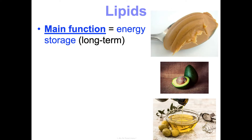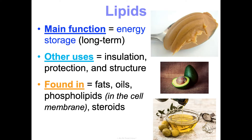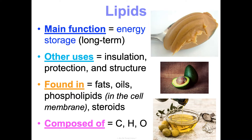Next are the lipids. Their main function is also energy storage, but long-term. We also use them for insulation, protection, and structure. When you think of lipids, we most often think of fats and oils in food, and that is true. But they're also found in other lipid formats in your body, like phospholipids in the cell membrane and steroids. Lipids, like carbs, are just made of carbon, hydrogen, and oxygen.